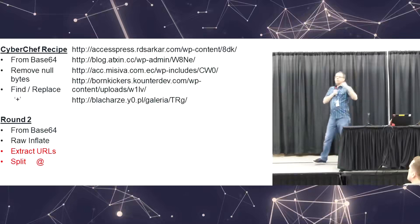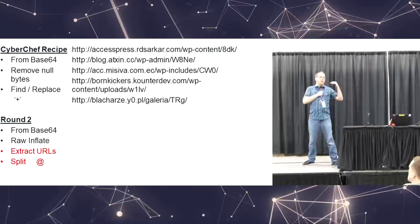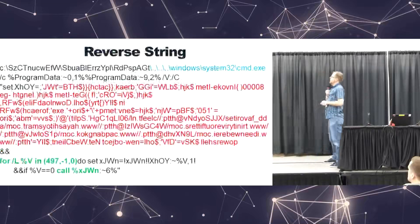Now, what other encoding methods has the Emotet crew been using over the past couple of months? In one variant they used 'cmd.exe' reached via dot-dot-slash traversal. Another interesting one had a huge long string of data tossed into a variable, then for each character it starts at character 497 and counts backwards to zero — character 497 is 'p', then 'o', 'w', 'e', 'r', 's', 'h', 'e', 'l', 'l' — so it's simply reversing the entire string, tossing it into a variable, and then calling it.